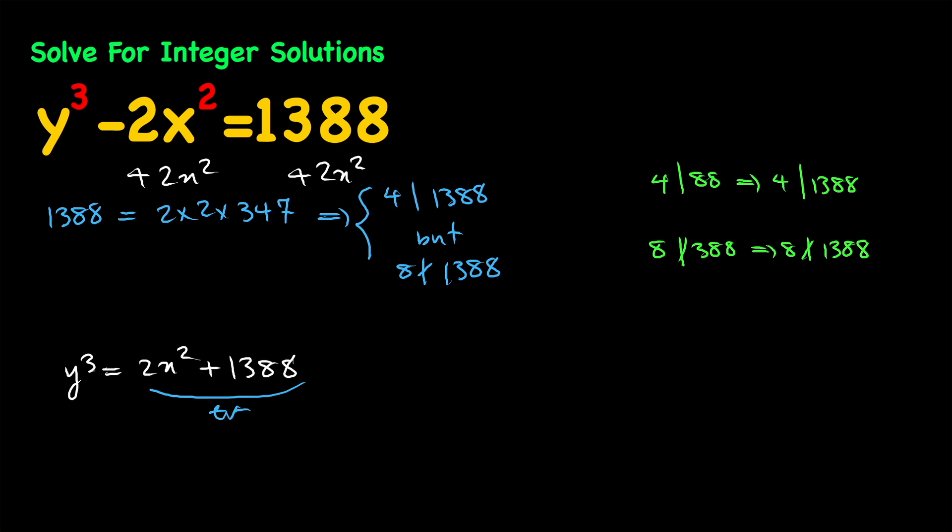So this is even therefore y cubed is even and from this I can say that y is even as well, because if y was odd then y cubed would have been odd as well but that's not the case. So from this I can say that 2 divides y, therefore 8 which is 2 cubed divides y cubed and this is really important for us.